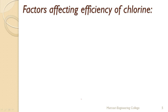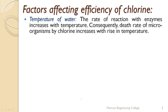The factors affecting the efficiency of chlorine in disinfection: first, temperature of water. The rate of reaction with enzymes increases with temperature; consequently, the death rate of microorganisms by chlorine increases with rising temperature. When enzymes react more with hypochlorous acid as temperature increases, the chemical reaction is faster, enzymes are more inhibited, and the death rate of microorganisms by chlorine also increases.